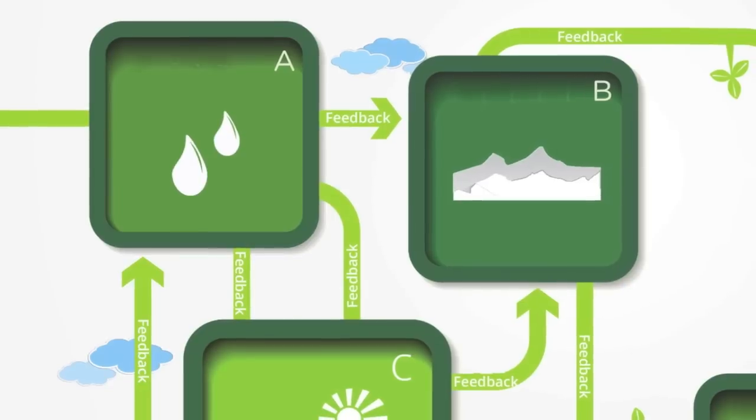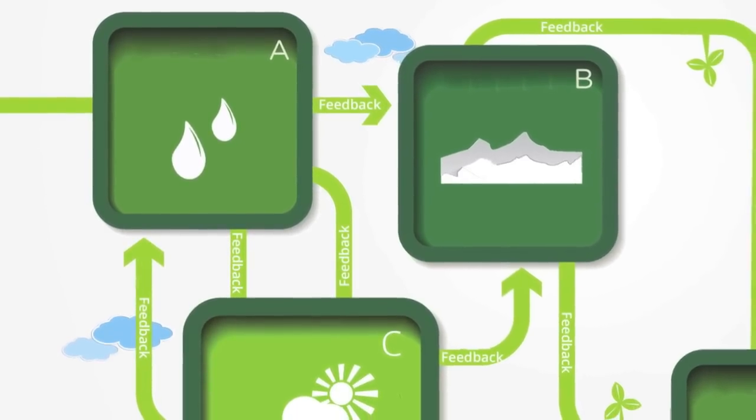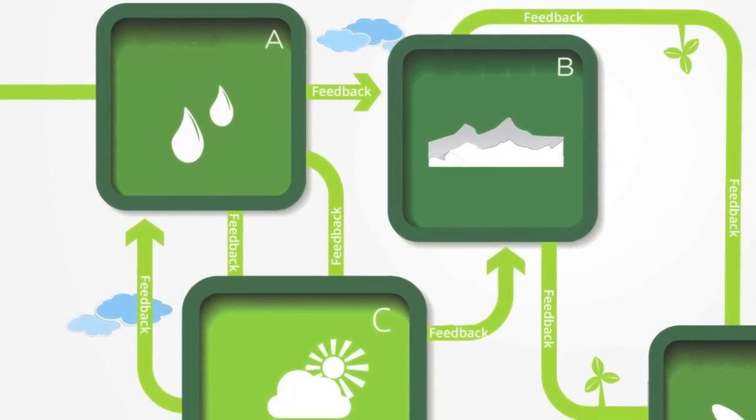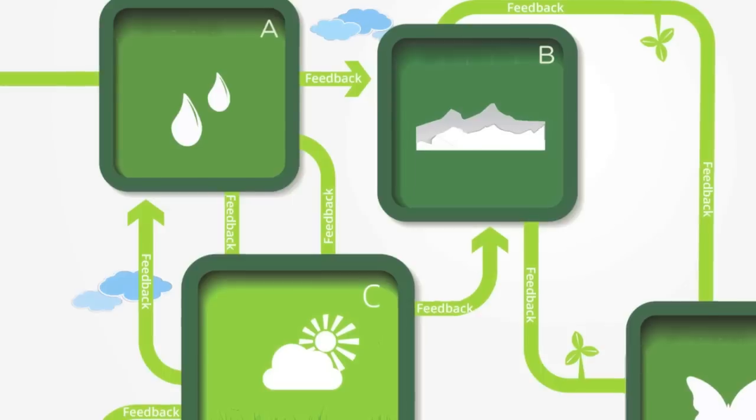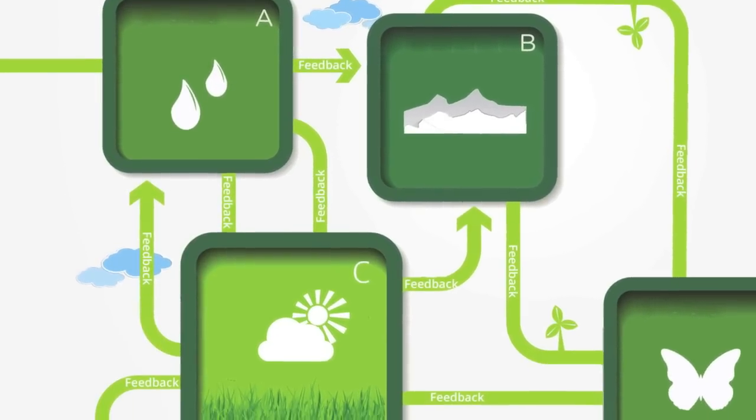For an ecosystem to develop over time requires a relatively stable balance between its constituent elements. This balance is typically regulated through what are called feedback loops.